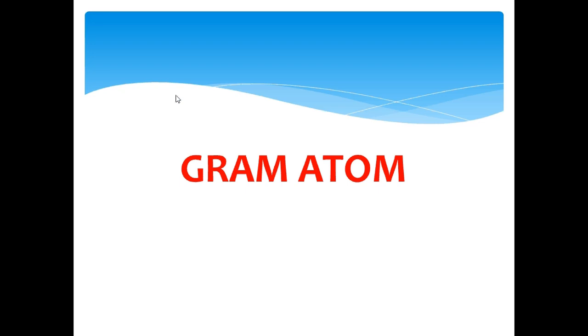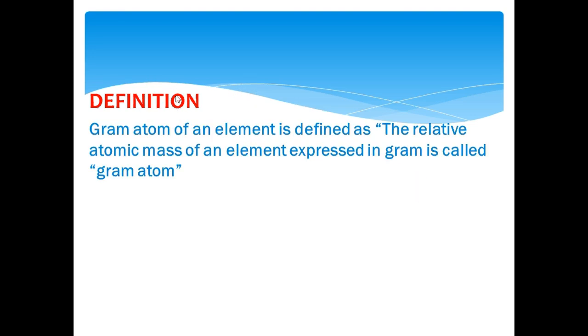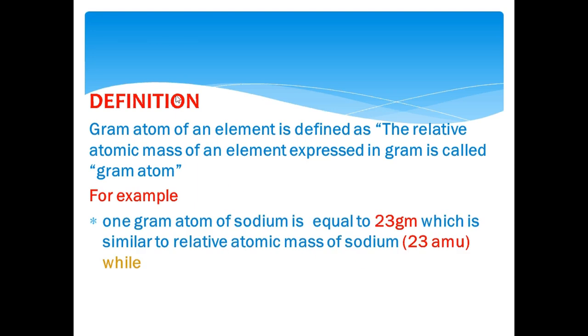So first we will talk about gram atom, which is defined as the relative atomic mass of an element expressed in gram is called gram atom. For example, 1 gram atom of sodium is equal to 23 gram, which is similar to the atomic mass of sodium, while 1 gram atom of calcium is equal to 40 gram.